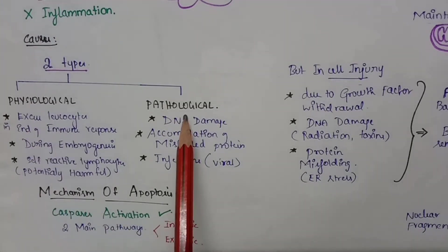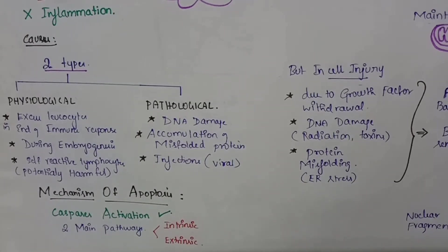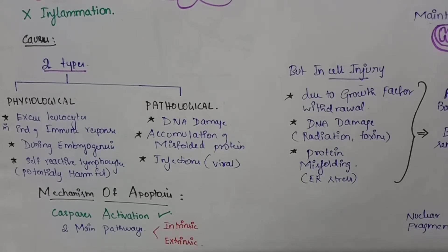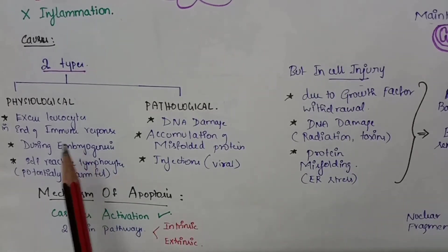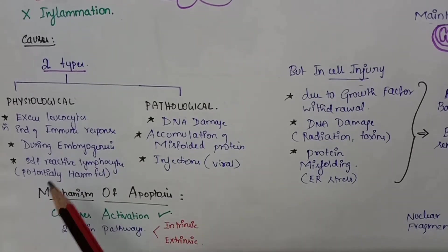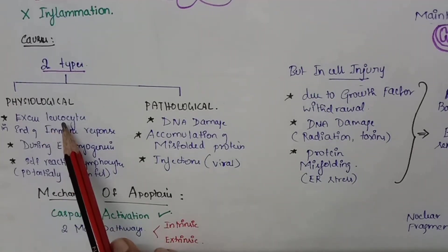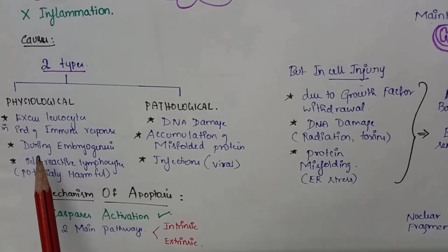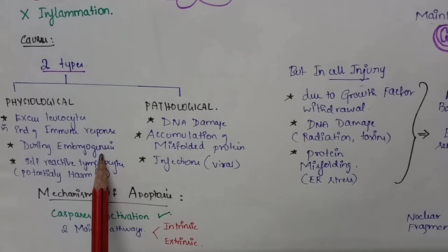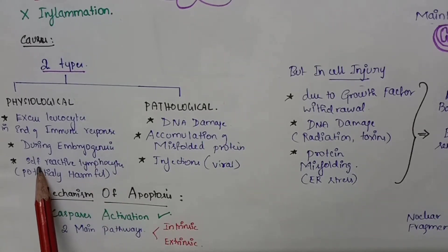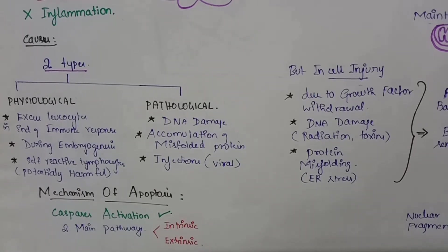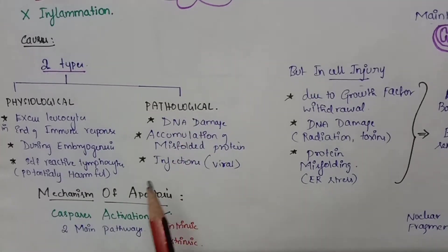The causes may be physiological and pathological. During normal cell development, some cells die and are replaced by others. In physiological apoptosis, it occurs with excess leukocytes at the end of the immune response, during embryogenesis, and when potentially harmful self-reactive lymphocytes are present.